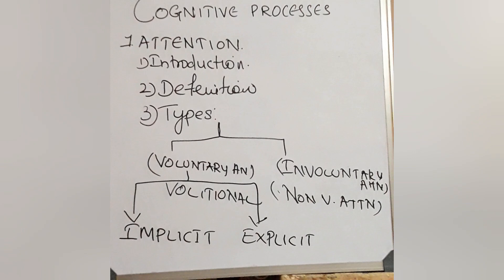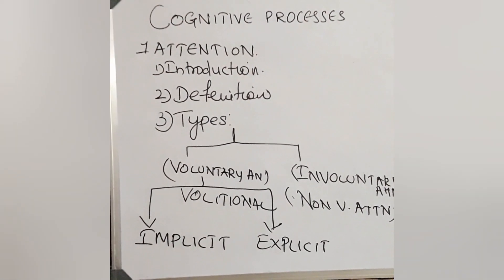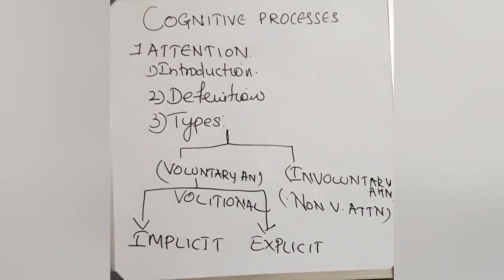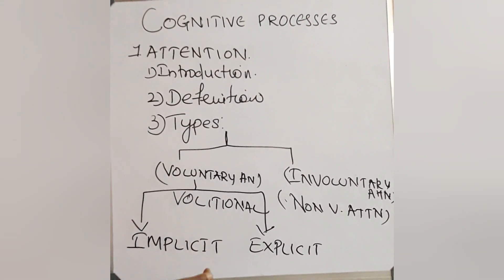Another one is explicit attention. Here, in this attention is obtained by repeated acts of will. Here, if I tell an example, you can understand very easily. Here, the repeated actions are coming.